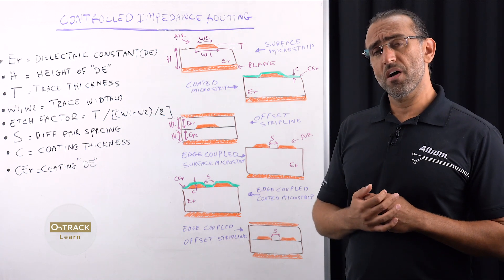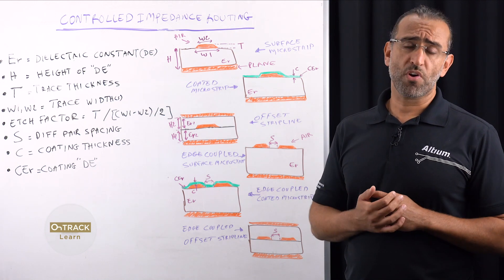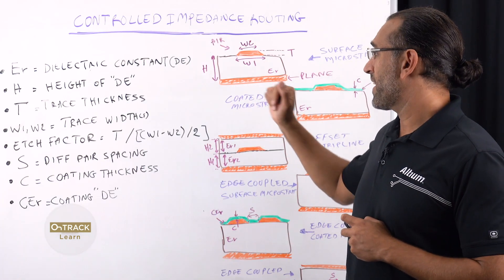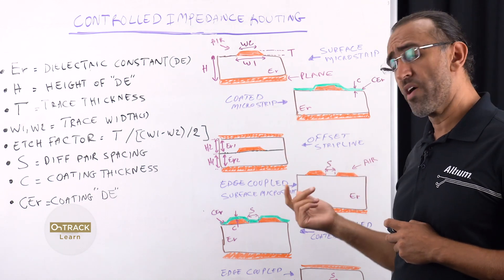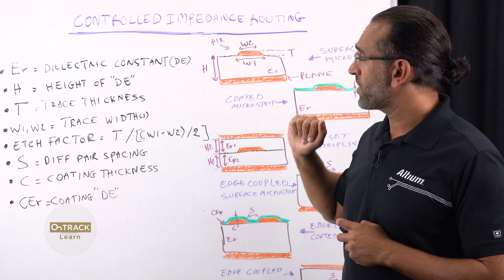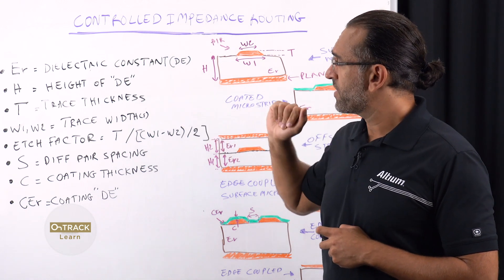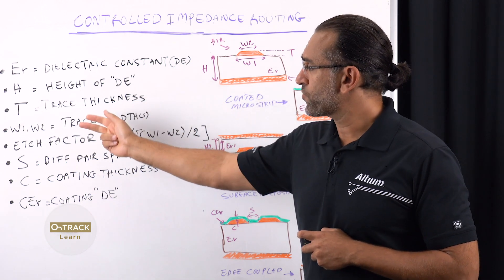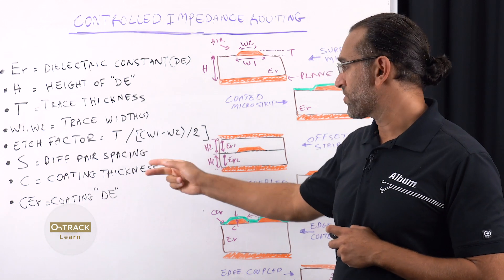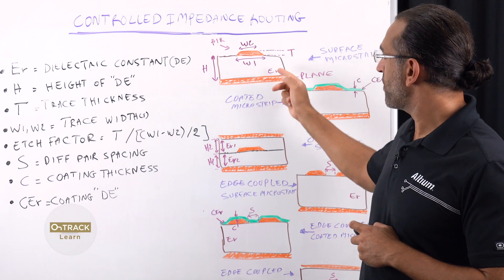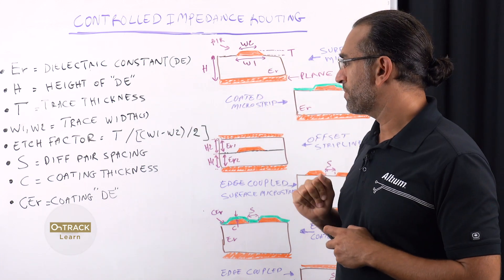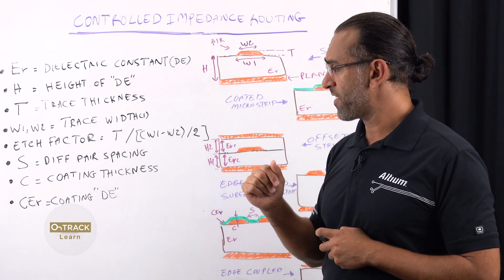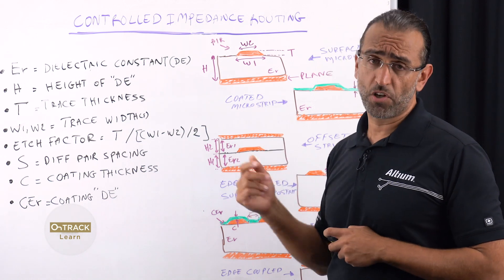So in the simplest form, the trace impedance value is determined from the PCB structure and is generated by these factors I have here in this board. The first of which is the dielectric constant of the material, whether it is the prepreg or the core, and then the height of that dielectric material, the trace width, the trace thickness, and also the trace width. And if you have a differential pair, the trace widths of both signal tracks, the edge factor — which is determined by this formula you see here, and you can see in this image what every symbol represents — S, which is the differential pair spacing, and the coating thickness of your solder mask and the dielectric constant of that solder mask.